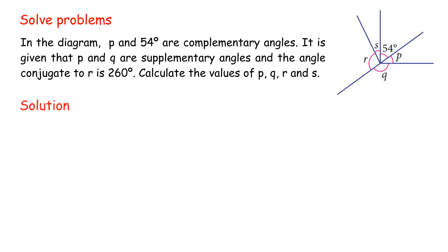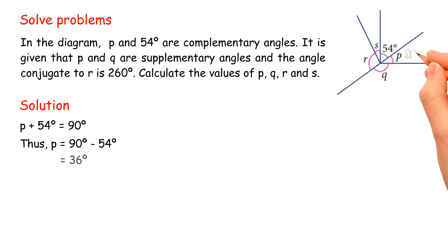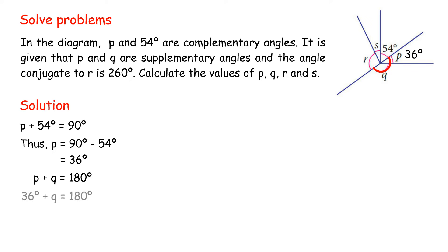Solution: p plus 54 degrees equals 90 degrees. Thus, p equals 90 degrees minus 54 degrees equals 36 degrees. p plus q equals 180 degrees; 36 degrees plus q equals 180 degrees. Thus, q equals 180 degrees minus 36 degrees equals 144 degrees.